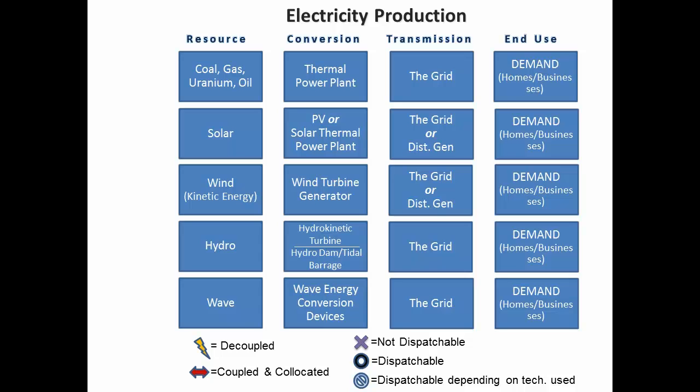I'm going to make some broad comparisons using the terminologies we've learned between different electricity production technologies. Note the key at the bottom. We're going to look at different energy resources starting with coal, gas, uranium, and oil and the relevant conversion technologies for electricity production. Note we're focusing on electricity production, not transportation here. These particular resources all involve a thermal power plant conversion process and you're using the grid to get the electricity to the end use, which is the demand for homes and businesses.